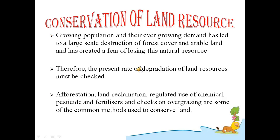If we regulate our use of chemical pesticides and fertilizers, it means we should not be using them excessively to enhance the fertility of the soil. We should also be checking on overgrazing by animals, because if animals are overgrazing, they eat up all the plants and grasses from the land. Later, when wind or water flows, it creates soil erosion. To avoid that, we should keep the land covered with grass or vegetation so that the roots of the plants hold the soil firmly and stop it from washing away. These are a few methods we can use to conserve land.